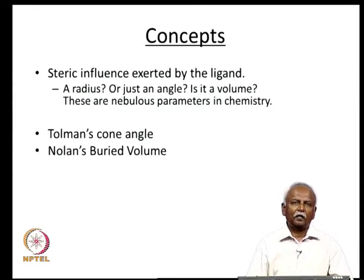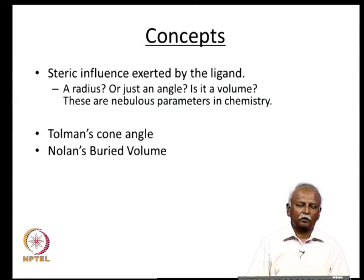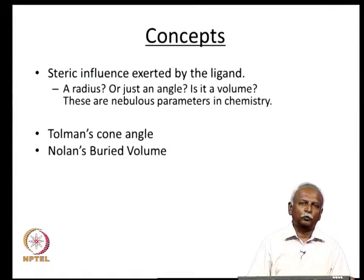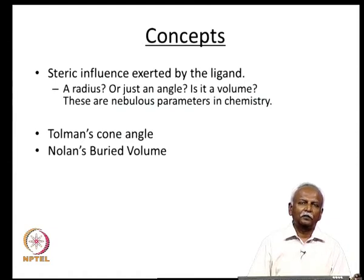Now let us try to understand how we can quantify this steric effect. In inorganic chemistry, we approximate an anion to a sphere and use that radius as a measure of steric influence — PF6− is a large anion, Cl− is small, and so on. But for ligands, we must decide: do we use a radius, a 2D projection like an angle, or a 3D property like a volume? Each approach has difficulties, making these nebulous parameters. The initial work was done with an angle parameter, developed by Tolman.